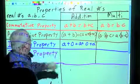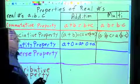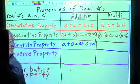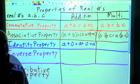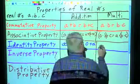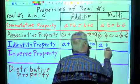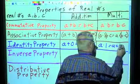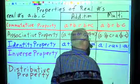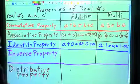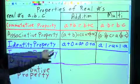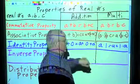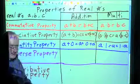For multiplication, the same thing — there is a number I can multiply by A and get A. A times 1 equals A equals 1 times A. That is the identity property of addition and multiplication.